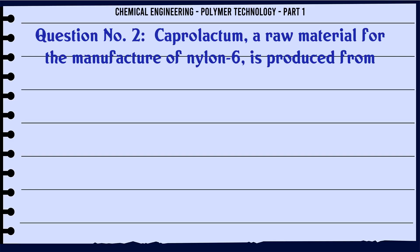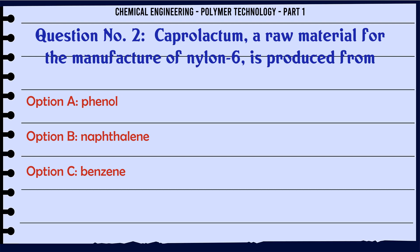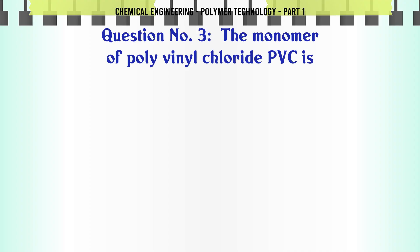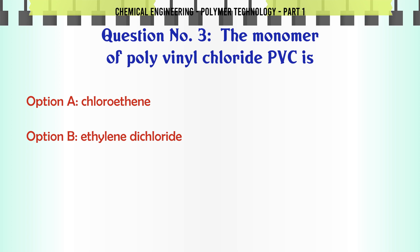Caprolactam, a raw material for the manufacture of Nylon 6, is produced from: A. Phenol, B. Naphthalene, C. Benzene, D. Pyridine. The correct answer is Benzene.